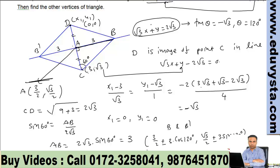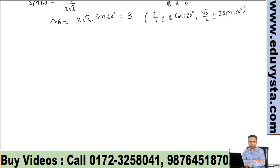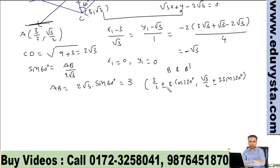Simplifying, we have 3/2 ± 3 cos 120°. What is cos 120°? That is -1/2. This is √3/2 ± 3 sin 120°. What is sin 120°? That is √3/2. Simplifying, we have 3/2 ∓ 3/2.